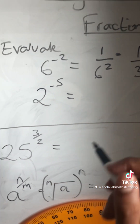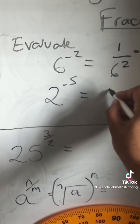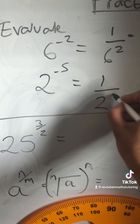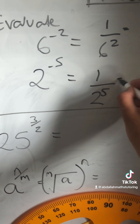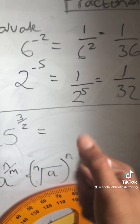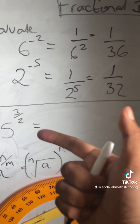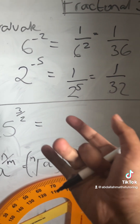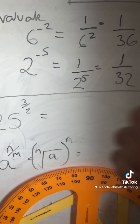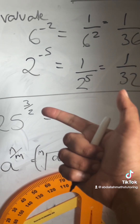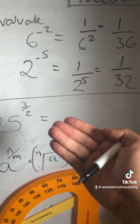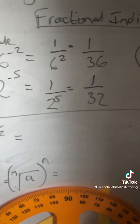2 to the minus 5 — that will be 1 over 2 to the power of 5, which is 1 over 32. Because 2 times 2 times 2 times 2 times 2: 2 times 2 is 4, 4 times 2 is 8, then 16, and then 32.